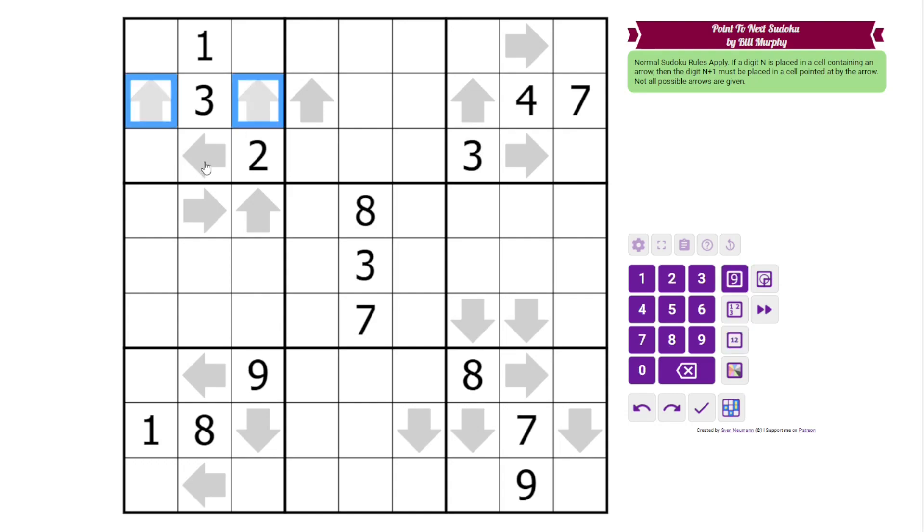The 4 can't go in either of these, so this must be 4, 5. And then these must be 6, 8 with 7, 9 up here, but there's a 9 here. So that resolves like that.